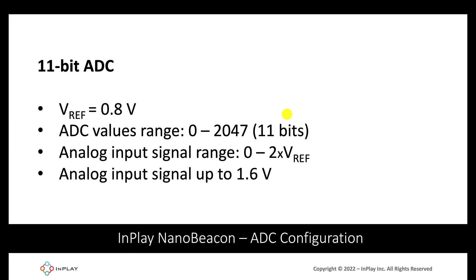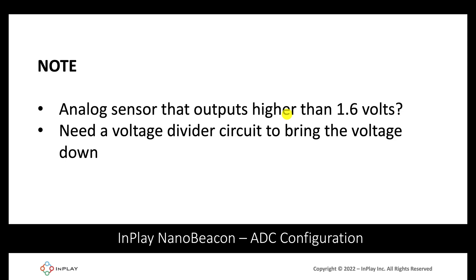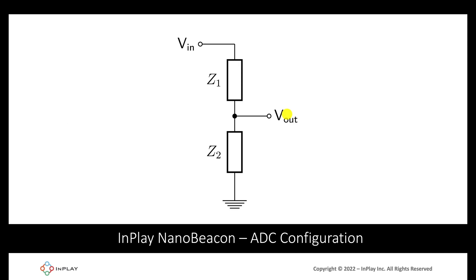This means that we have ADC values ranging from zero to 2047, which is the 11 bits, and the analog input signal range is from zero to two times the reference voltage, meaning the analog input signal can be up to 1.6 volts. If you have an analog sensor that outputs higher than 1.6 volts, then you'll need to utilize a voltage divider circuit to bring the voltage down to 1.6 volts maximum when input into the ADC pin on the IN100.